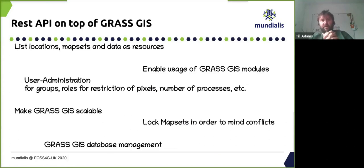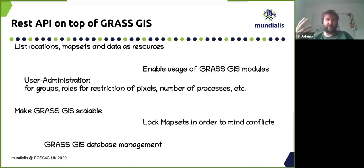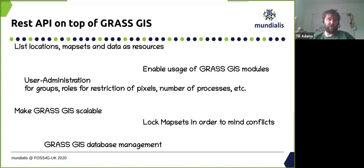We had thoughts about what we would need to do in order to port GRASS GIS into the web. First, we must enable the user to list all the locations, mapsets, and data as resources. Of course, we would need to enable the usage of all GRASS GIS modules via HTTP calls, so you could directly access remotely installed GRASS GIS via a REST API.